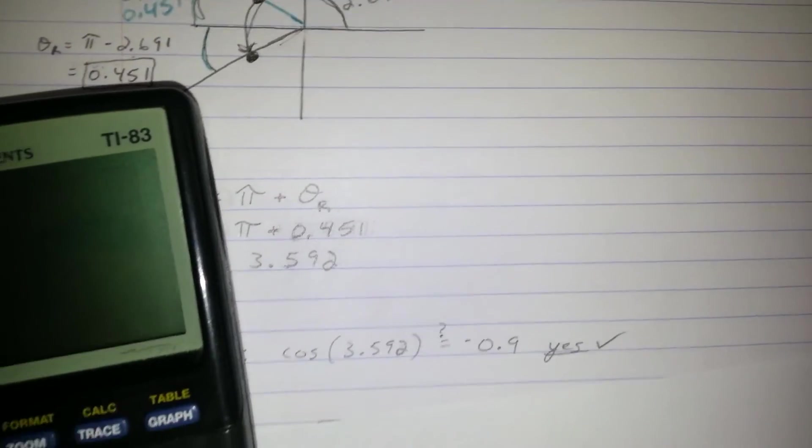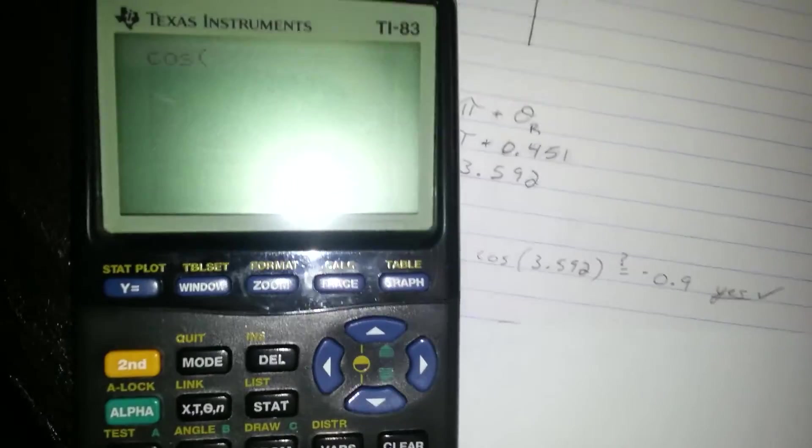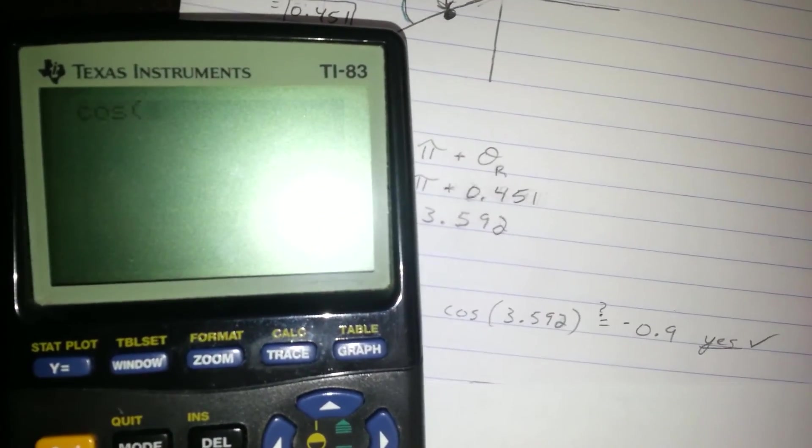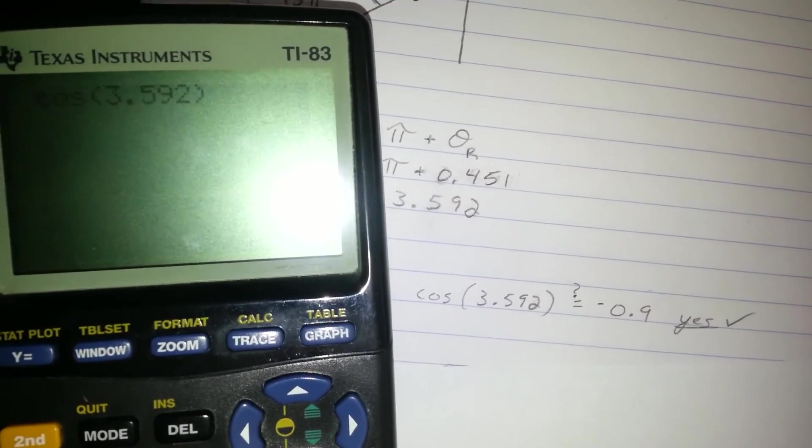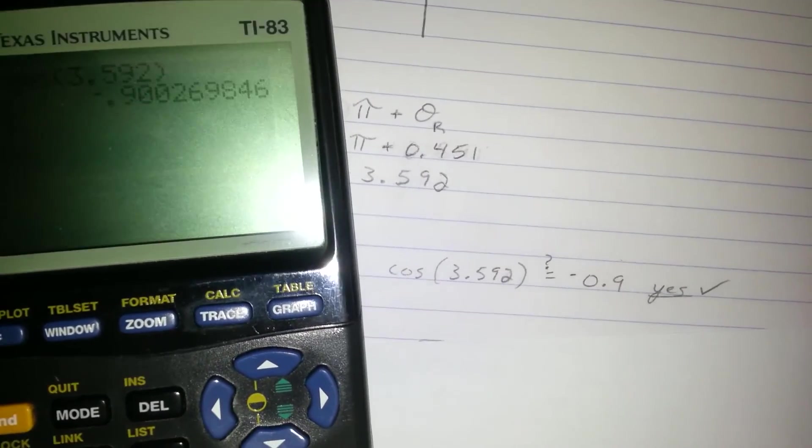And for a check, you can just type in cosine 3.592. Does it equal negative 0.9? Yes, it does.